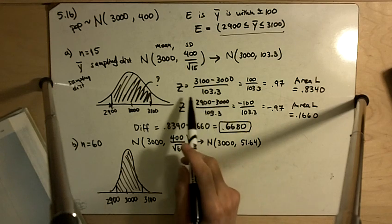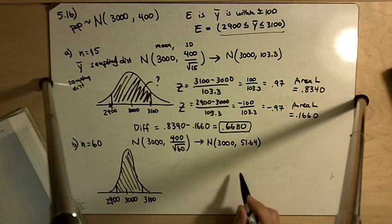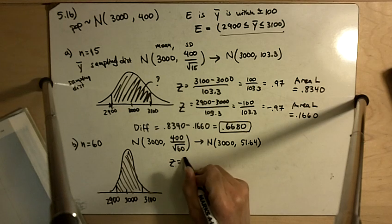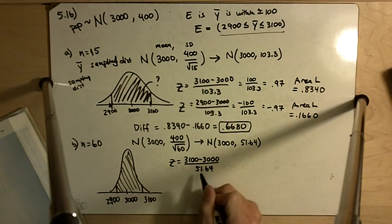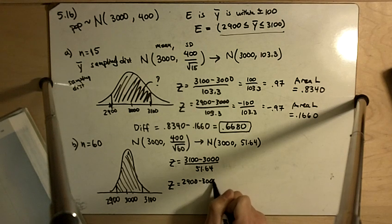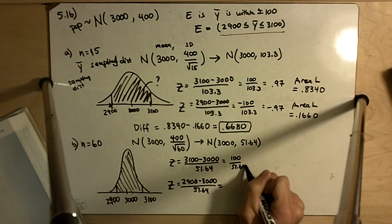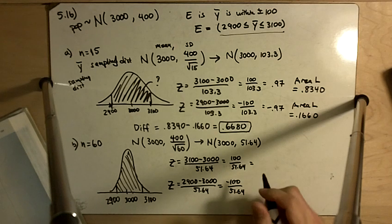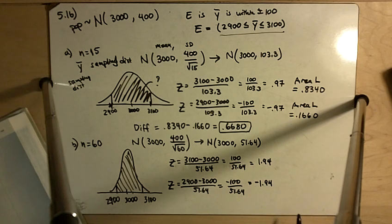Here, look just eyeballing it, 3100, 100 above, and 100 below. That's almost two standard deviations, not quite, so it's going to be close to 95%, but it'll be a little bit less than that. So here, we've got Z is equal to 3100 minus 3000 divided by 51.64. And then on the other side, we've got 2900 minus 3000 divided by 51.64. We've got 100 over 51.64, negative 100 over 51.64. 100 divided by 51.64 is positive 1.94. And over here, we've got negative 1.94.